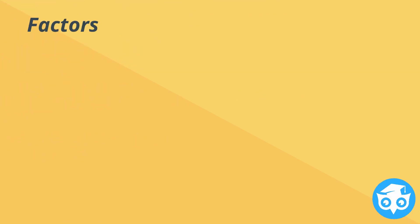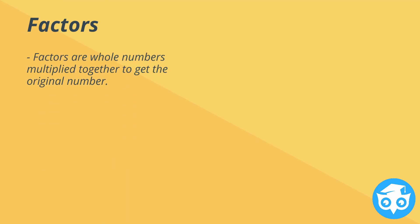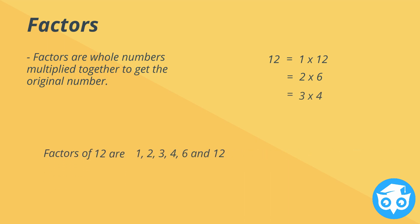We need to learn factors. Factors are whole numbers multiplied together to get their original number. 12 is equal to 1 times 12, 2 times 6, and 3 times 4. So we can say that the factors of 12 are 1, 2, 3, 4, 6, and 12.